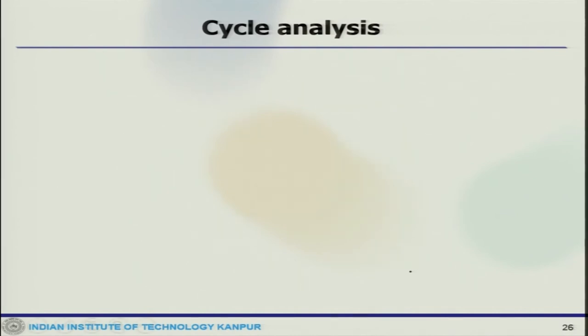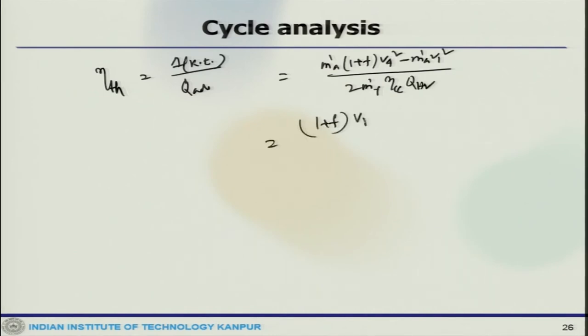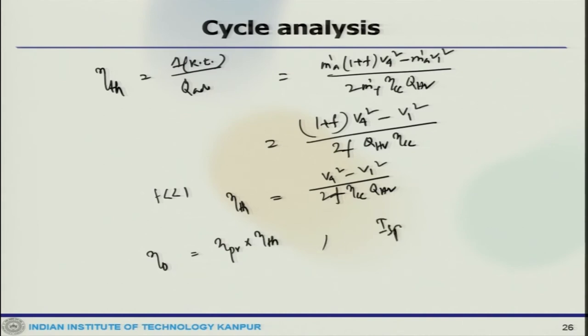Similarly, we can find out thermal efficiency, it is delta kinetic energy by Q added. This would be m_dot_A times 1 plus F times V4 square minus V1 square divided by 2 m_dot_F eta_combustion_chamber Q_HV. Which is written as V4 square minus V1 square divided by 2 F Q_HV eta_CC. Again, if F is small, this will boil down to V4 square minus V1 square by 2 F eta_CC Q_HV. And overall efficiency, which would be eta_PR into eta_thermal. And ISP would be T by m_dot times g. These are all the performance parameters that one can calculate and look at.